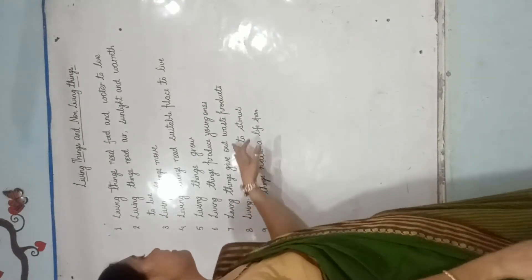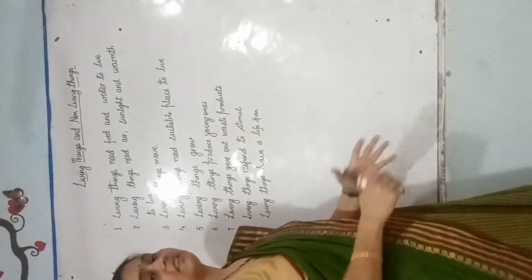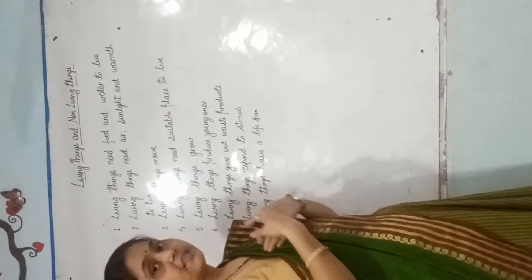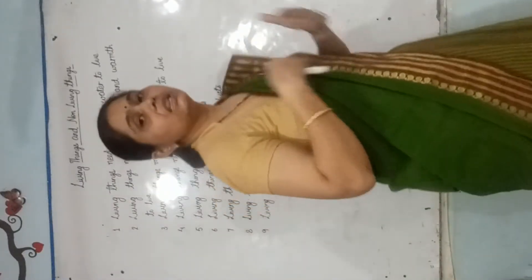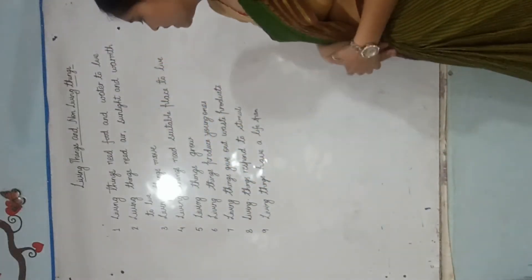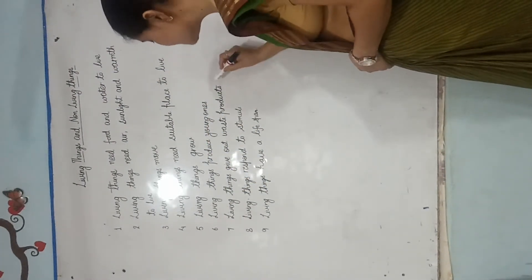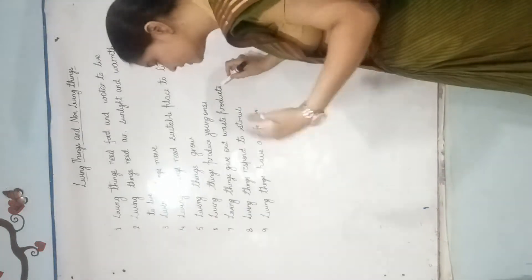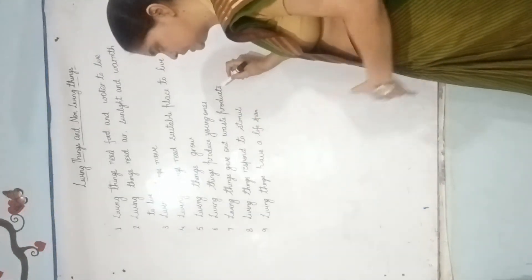Now, living things give out waste products. Living things जो होती है, वो waste products देती है. जो living things होती है, वो कुछ ना कुछ खाती है — they need something to eat. जब उन्होंने कुछ खाया, तो उनकी body के अंदर digestion होता है. Digestion की प्रक्रिया के फलस्वरूप ये waste products जो होती है, वो excrete out करती है.